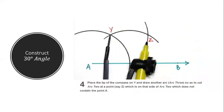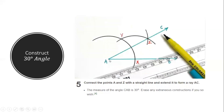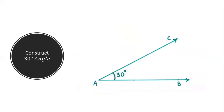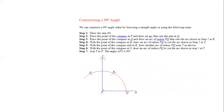Since we need 30 degrees, we bisect the 60-degree angle. Place the compass tip at point Y (where the two arcs intersected) and, maintaining the same compass length, draw a third arc that cuts arc 2. The point where arc 2 and arc 3 intersect gives us our 30-degree angle. Drawing a line from point A through that second intersection yields a perfectly constructed 30-degree angle.